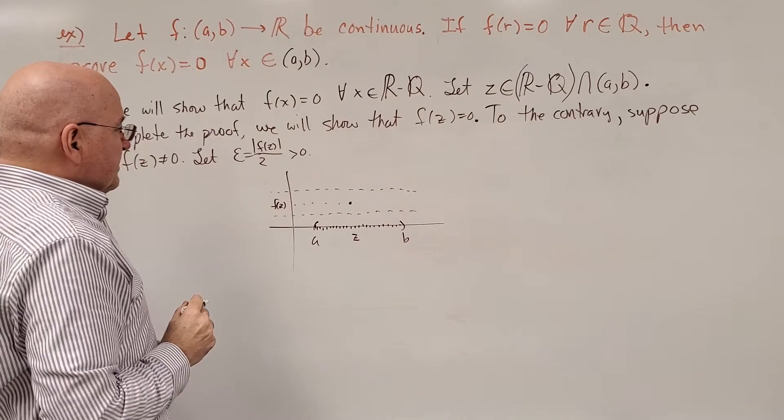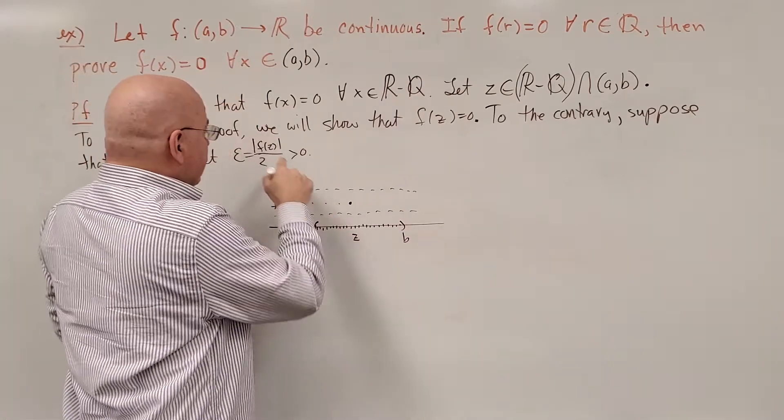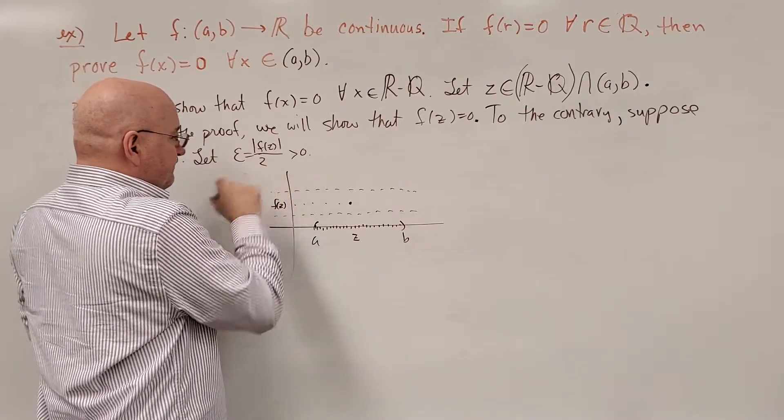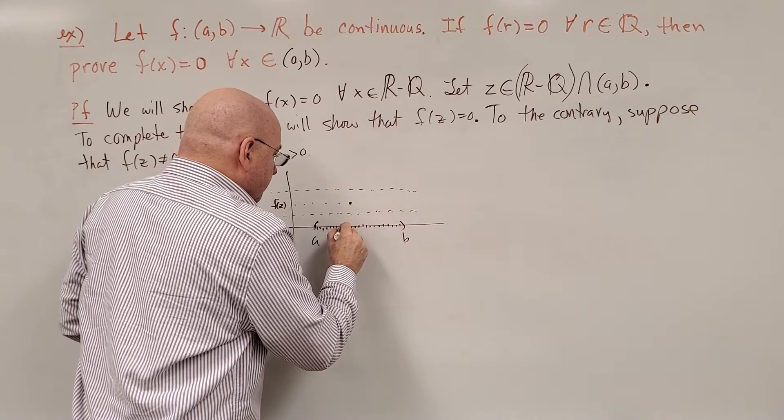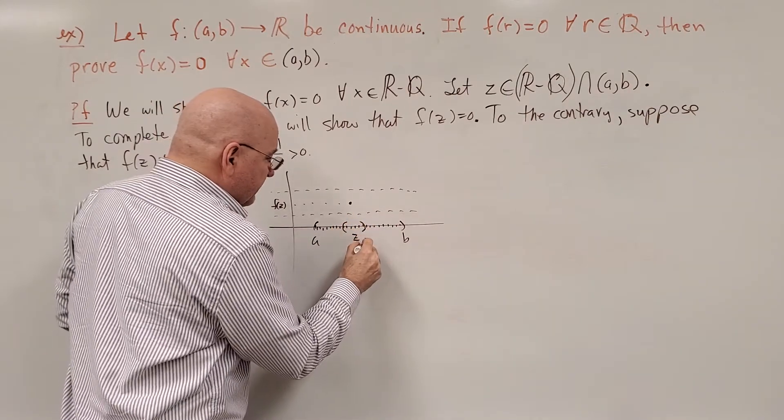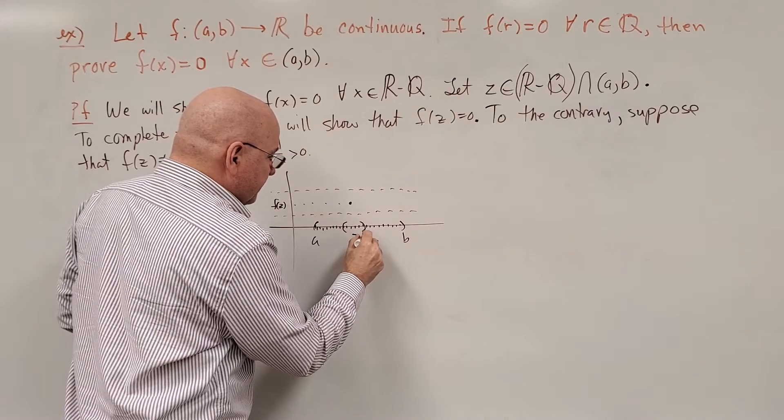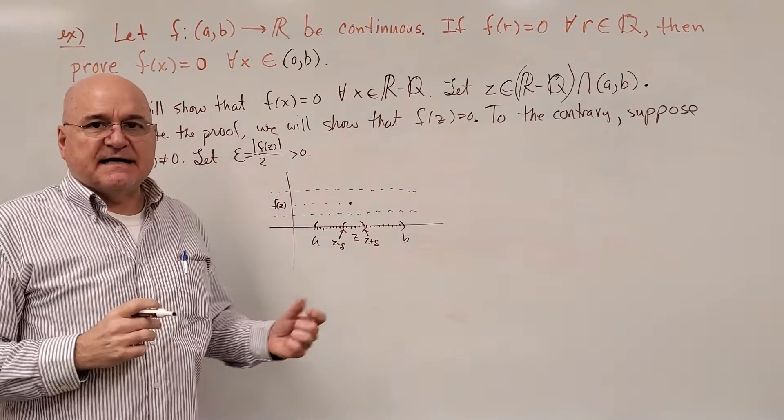Where we'll reach the contradiction is f is continuous. That means that for every epsilon, including this one, there exists a delta. And I'll represent delta here by this being z plus delta and this being z minus delta. There exists a delta, a small positive number,